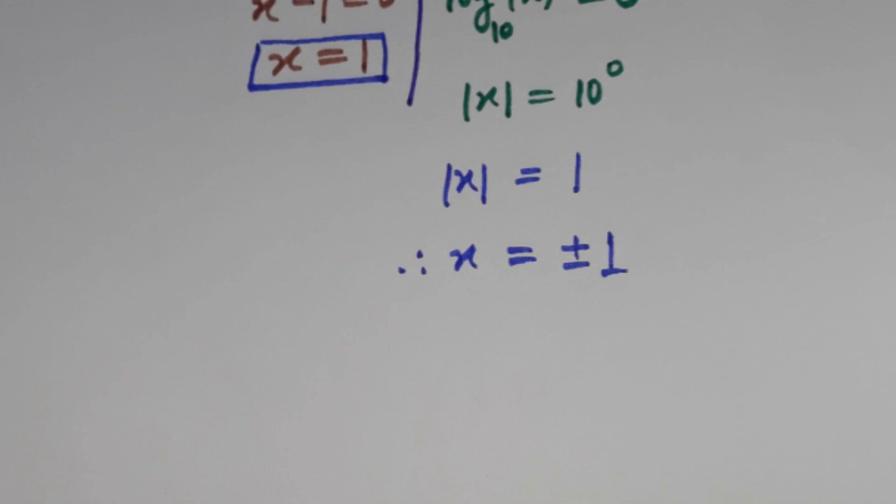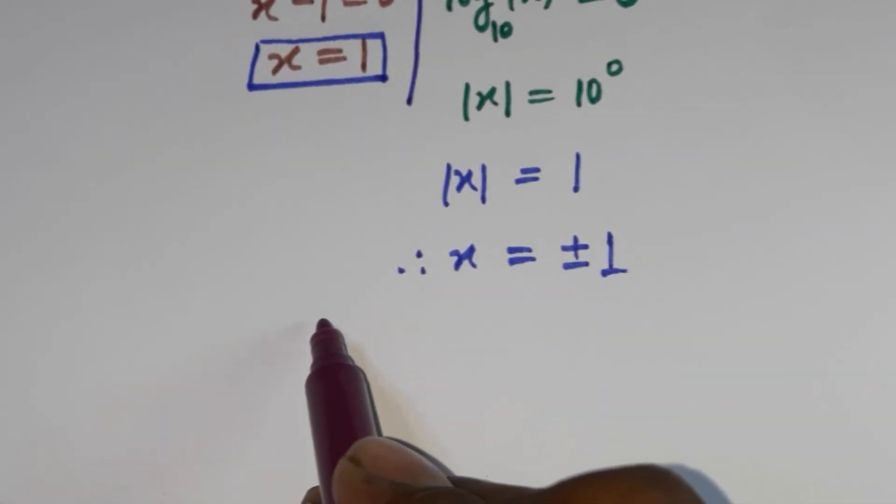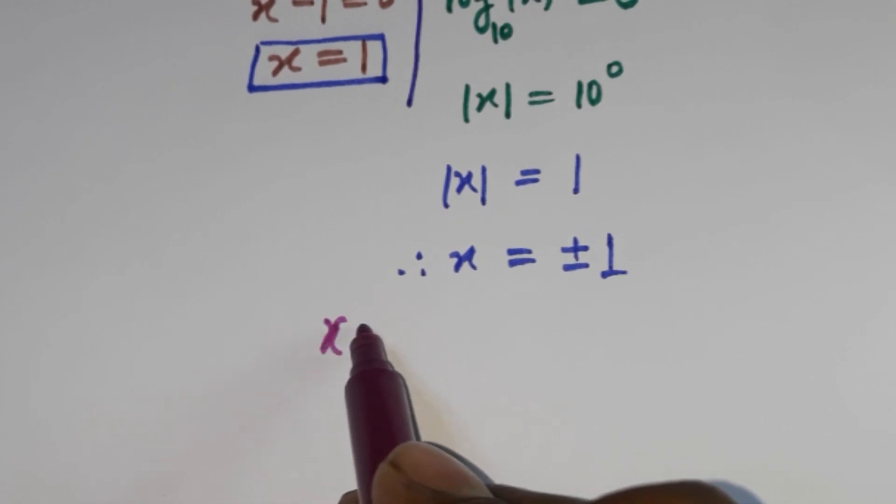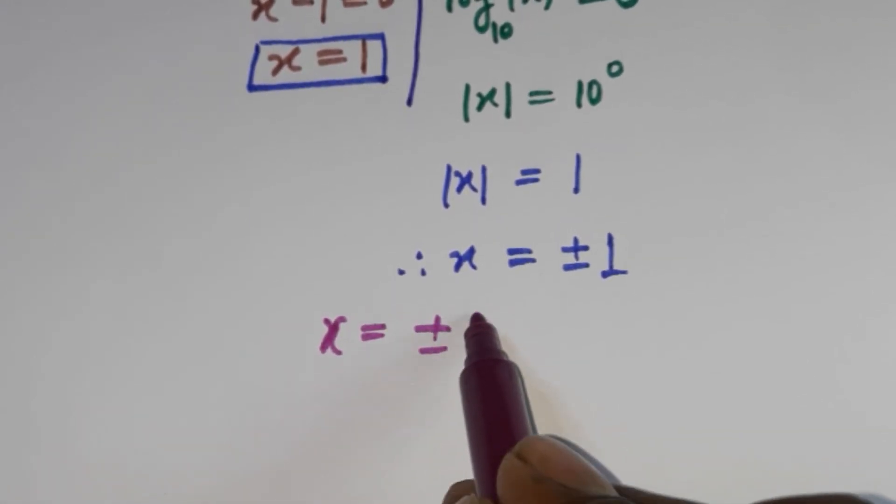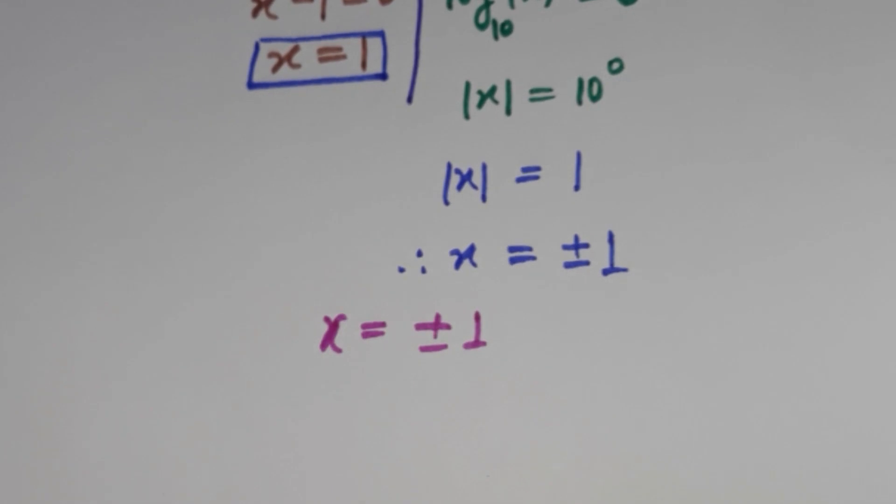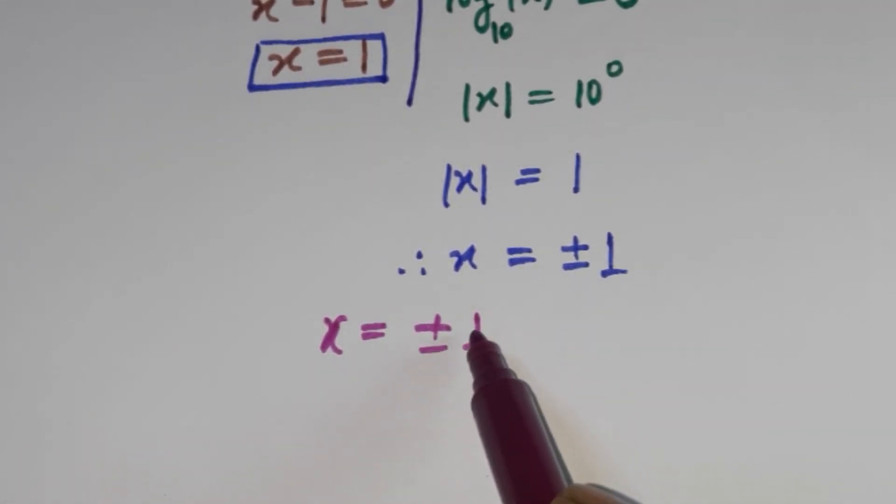That is over here. So x is equal to plus minus 1 is our solution. So we have two solutions: plus one and negative one.